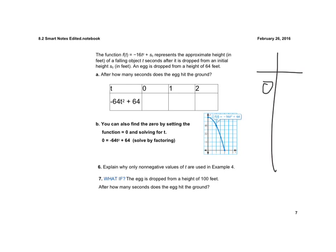So if I plug 0 in, 0 squared is 0, times -64 is 0, plus 64 is 64, so this would be 64. I plug 1 in, 1 squared is 1, 1 times -64 is -64...